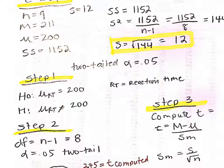Essentially, if our null hypothesis is supported, we would not be able to reject it, because what we'd be saying is that even though reaction time was increased, it wasn't increased enough to be significantly different from what we would expect by chance. On the other hand, if we found an extreme score — in this case on the positive side — then we could reject the null hypothesis because we have statistical significance, and we would accept the alternative that reaction time is not equal to 200.